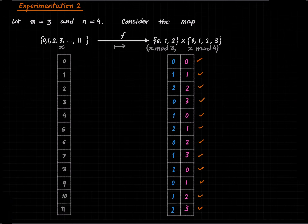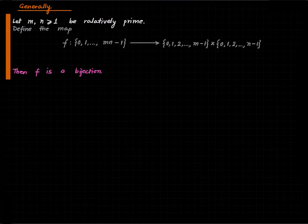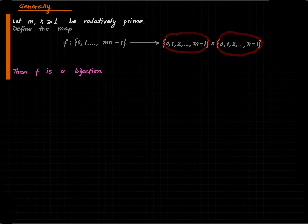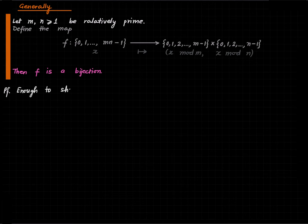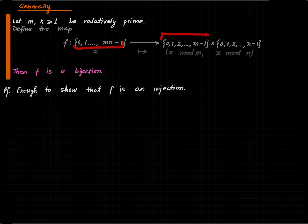Now let's prove the general statement. Suppose m and n are relatively prime positive integers, and define the map whose domain is the set of all possible remainders when you divide something by mn, with target the cross product of all possible remainders modulo m and modulo n. We claim this map is a bijection. It is enough to show that f is an injection, because the size of the domain equals the size of the target — so injectivity, surjectivity, and bijectivity are all equivalent here.